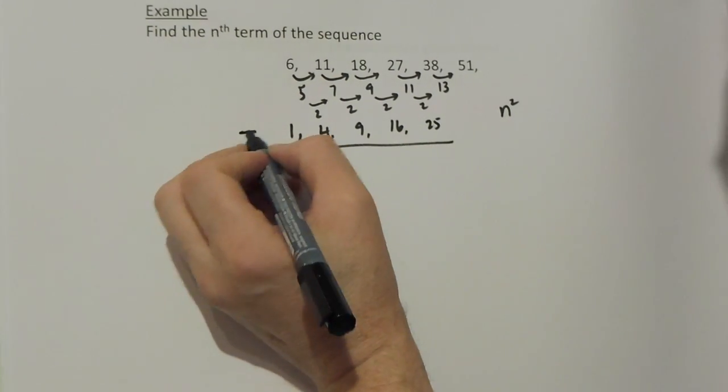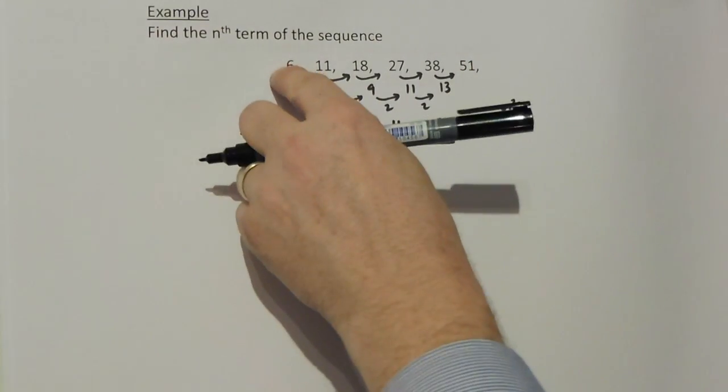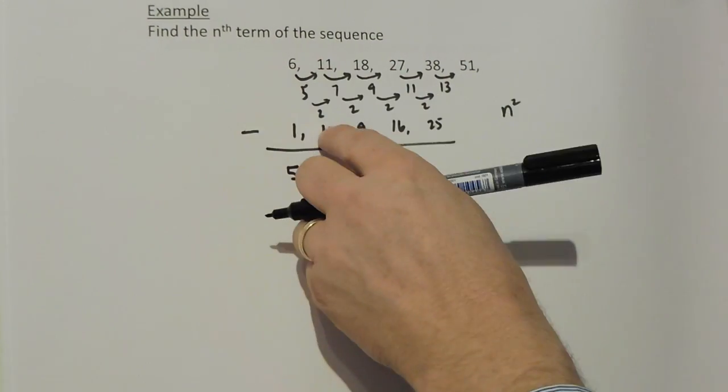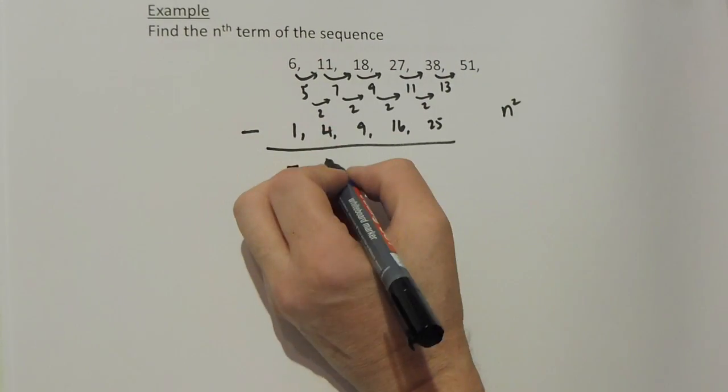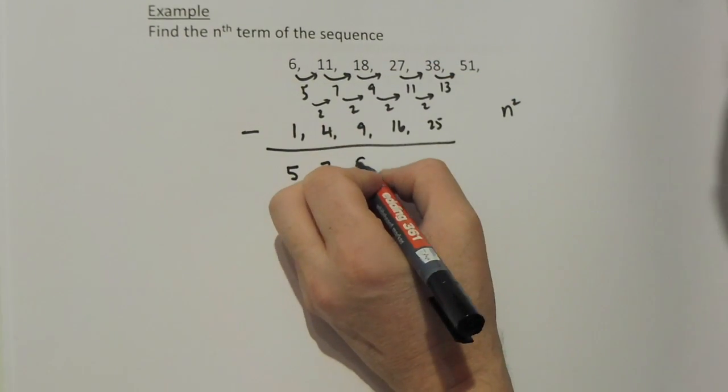If I remove n squared from the original sequence: 6, remove the 1, I get 5. 11, remove the 4, I get 7. 18, remove the 9, I get 9.